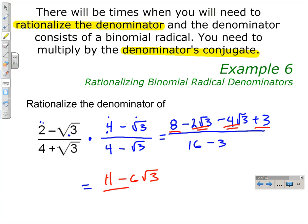In the denominator, we simply subtract 3 from 16 to get 13. Our original expression with a rationalized denominator is 11 minus 6 square roots of 3, all divided by 13.